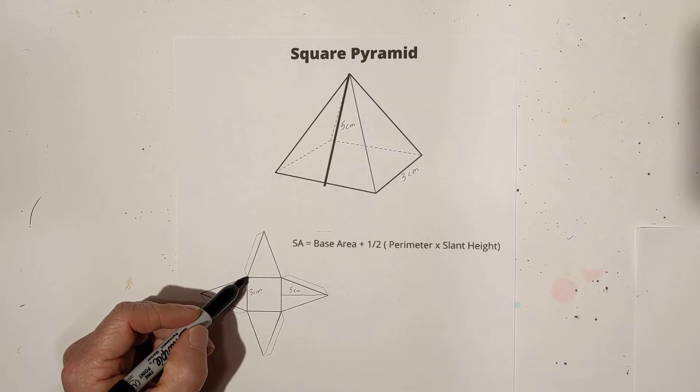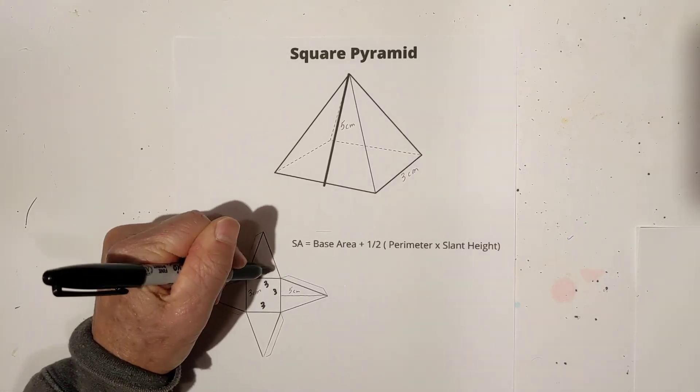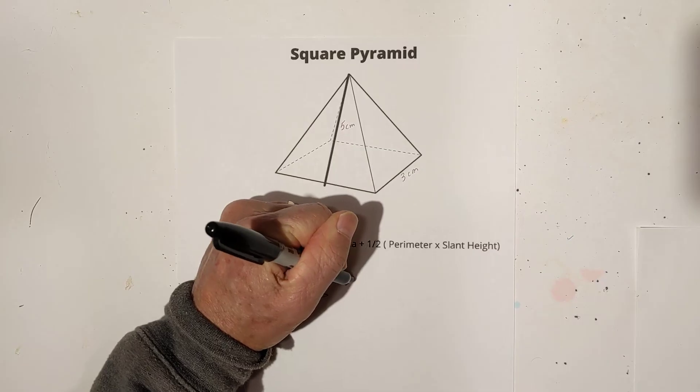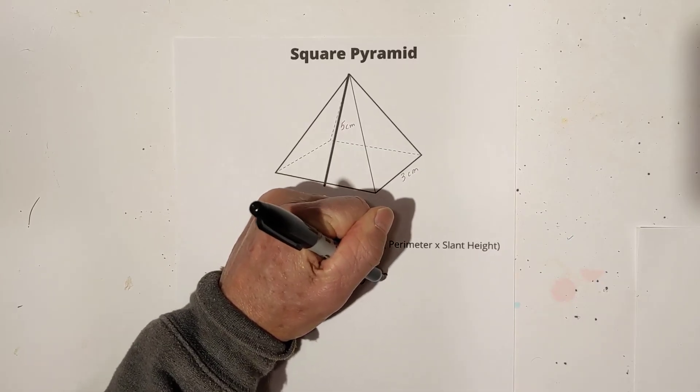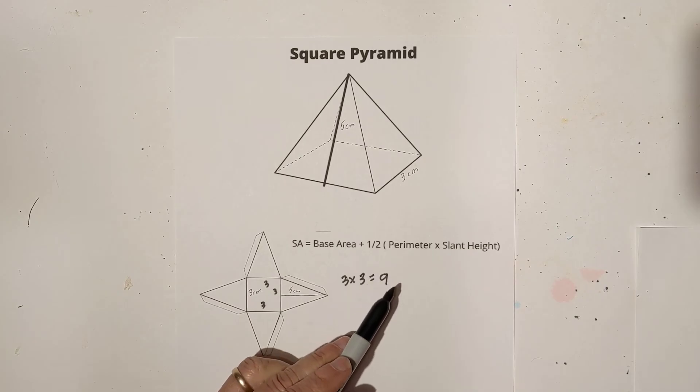First we have base area. Remember, it's a rectangle. Each of these are three. So you have three times three, which equals nine.